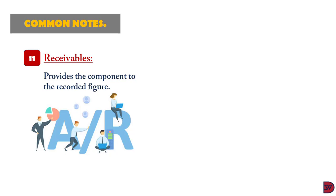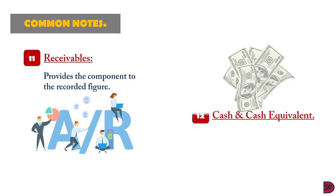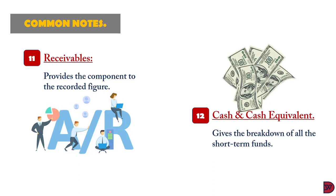Note 11: Receivables. The various components making up the sum of receivables recorded in the statement of financial position under current assets will be listed here, including trade receivables, which is essential in estimating the receivable collection period, as well as staff and other receivables. Cash and cash equivalents details the breakdown of short-term funds held by the business, including amounts kept in the bank with the institution named, those held in hand, and any short-term investments.